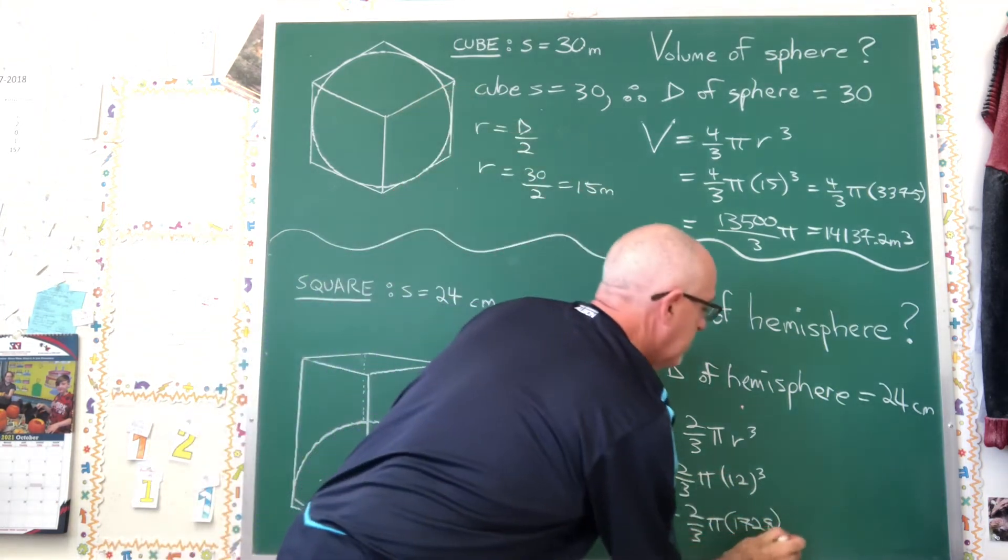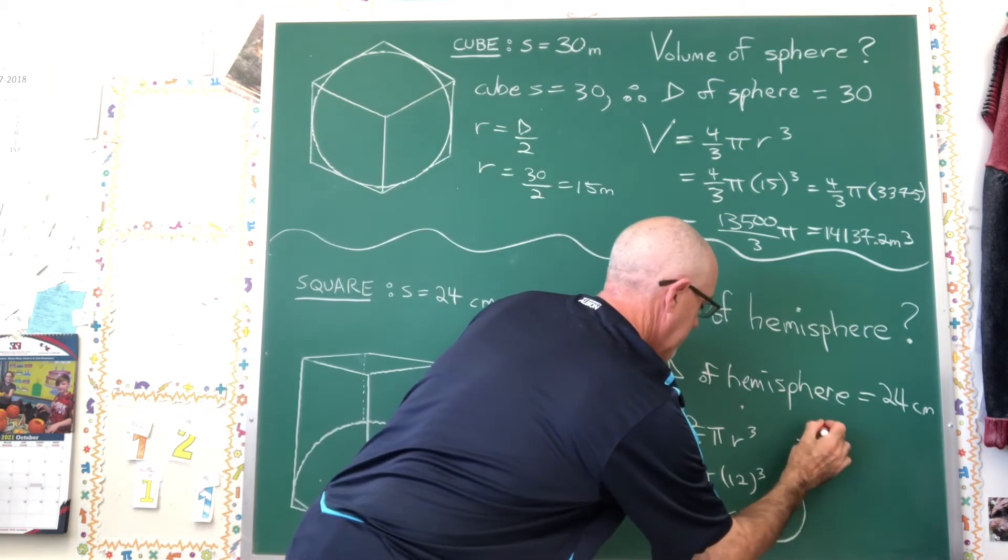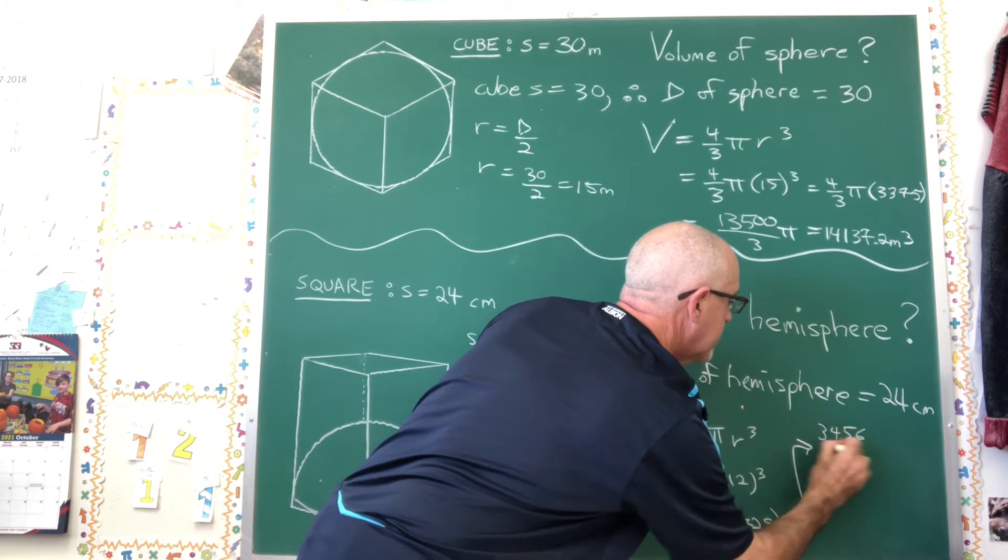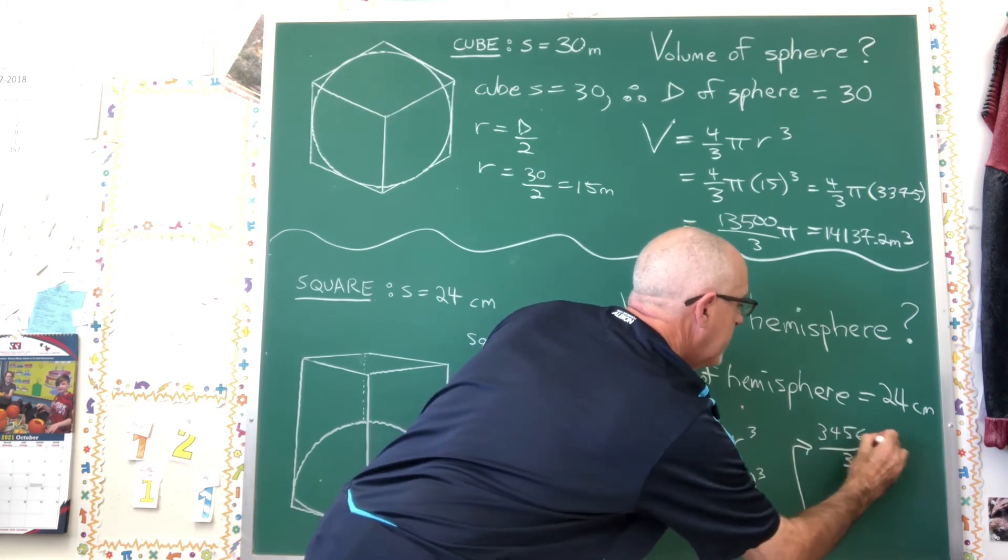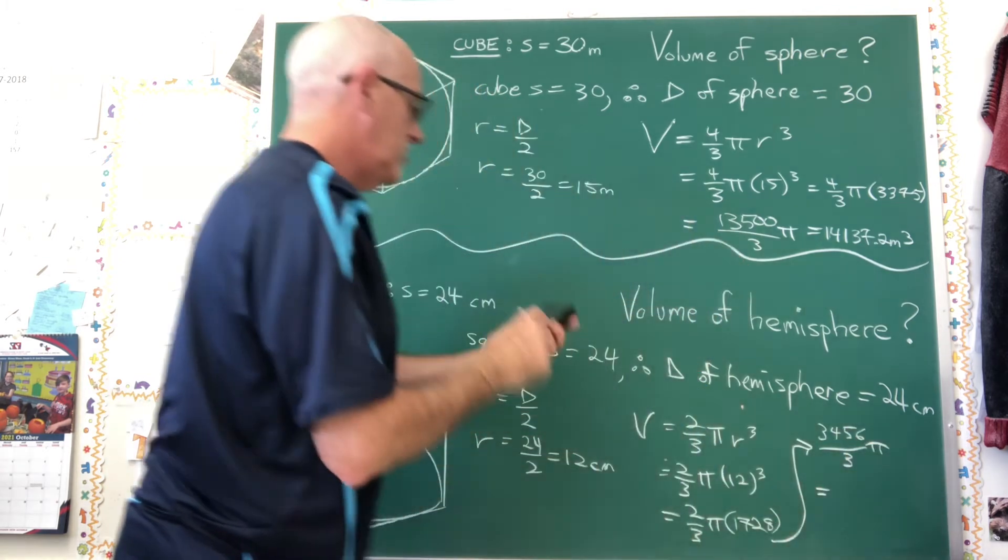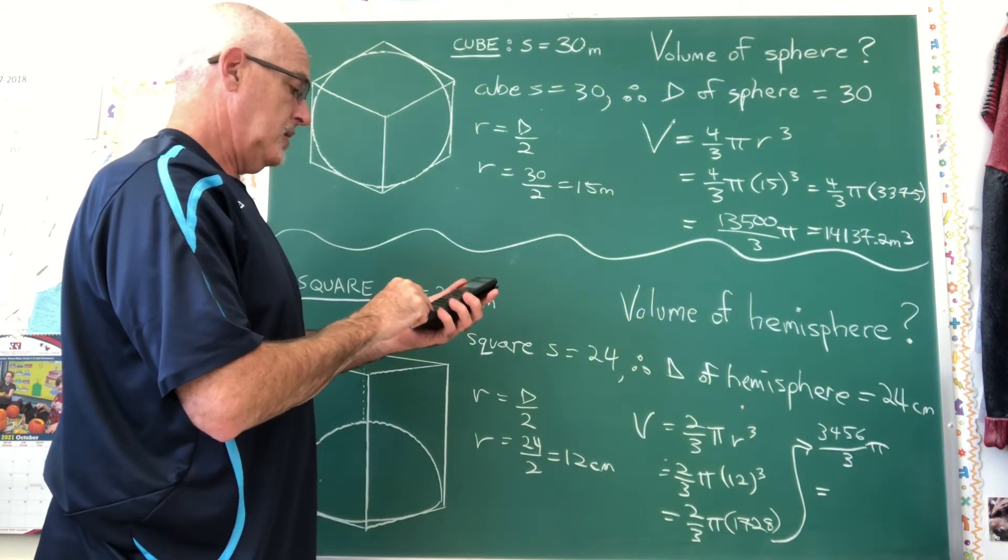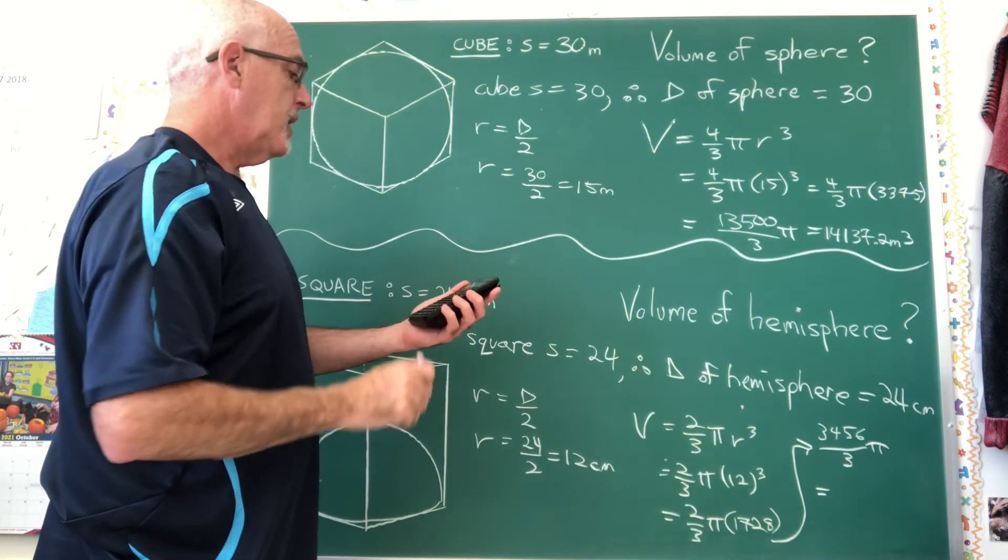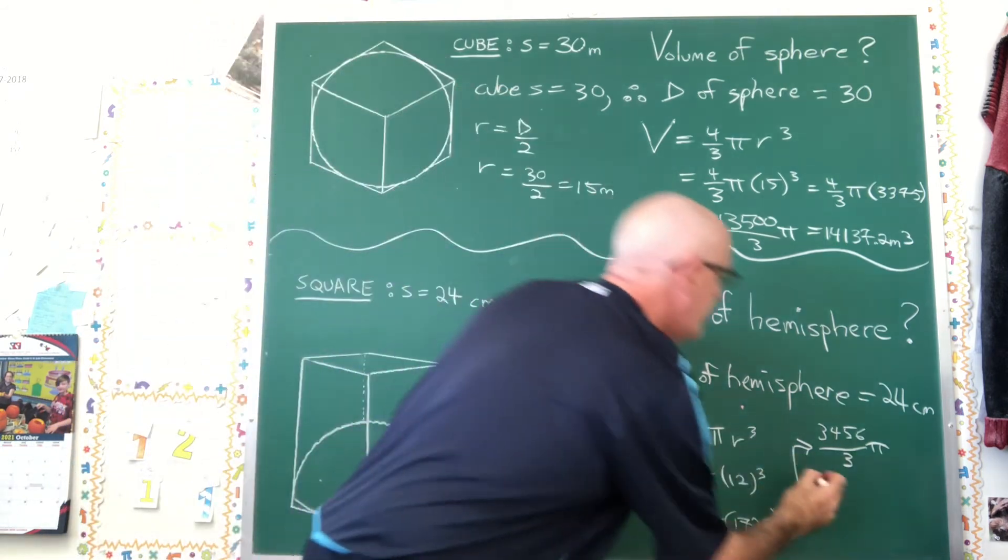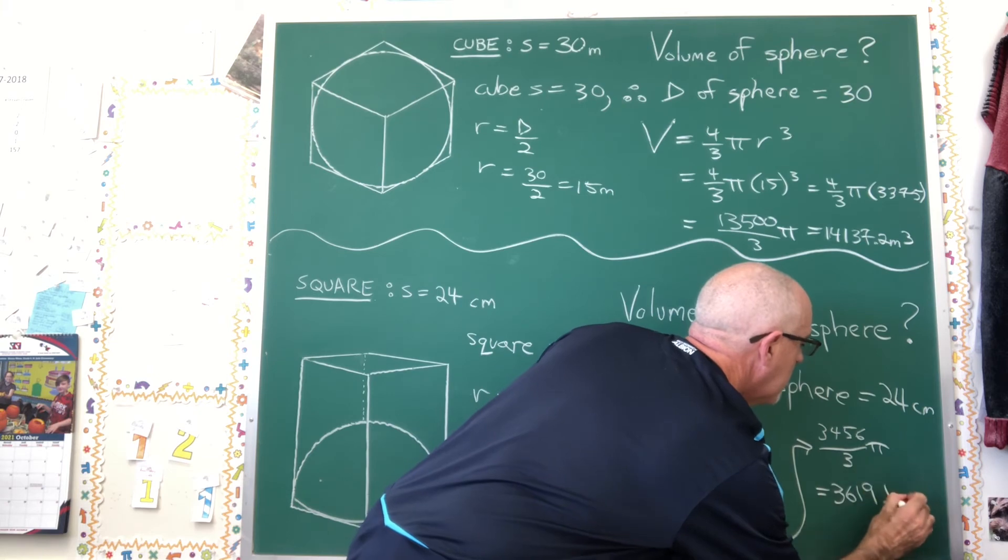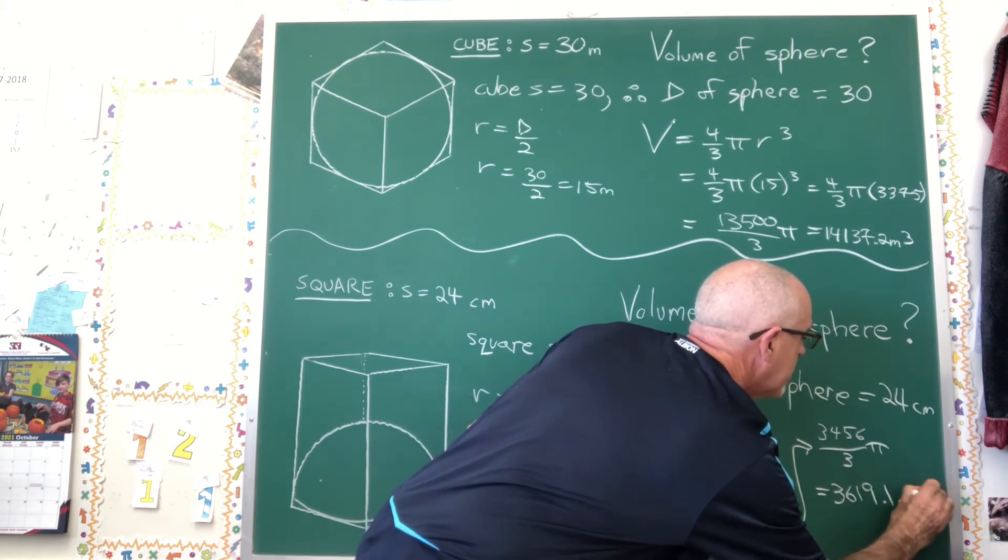That equals 3,456 over 3 pi. And going into decimal mode, I have 3,619.1 centimeters cubed.